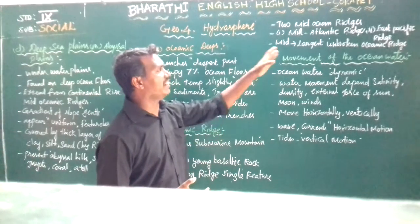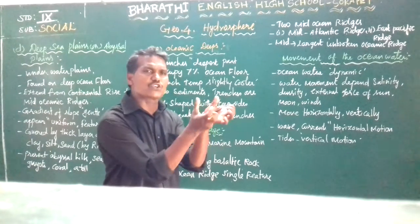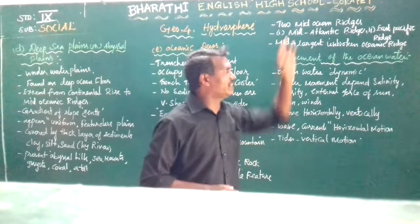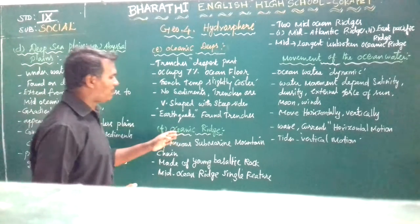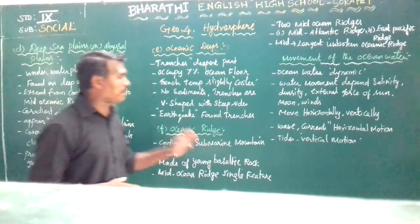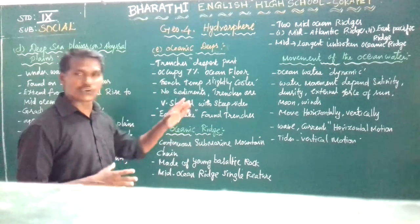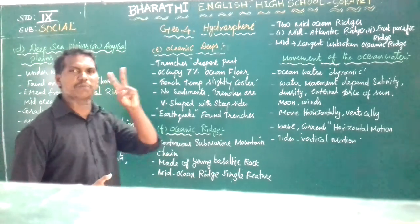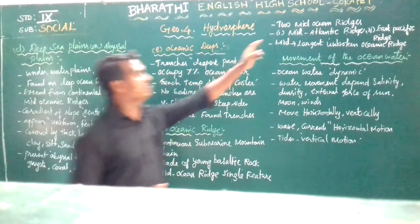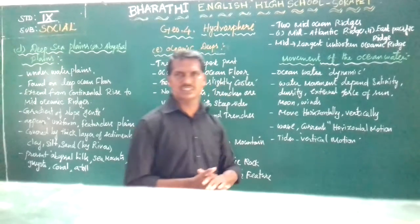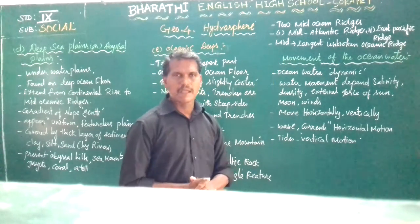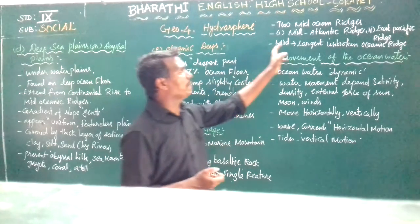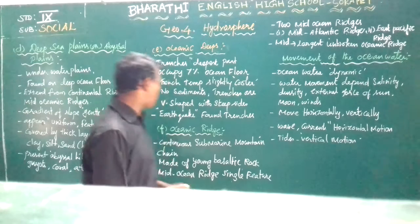To summarize: the oceanic ridge is a continuous submarine mountain chain made up of basaltic rock. The mid-oceanic ridge is a single feature. There are two types: the mid-Atlantic ridge and the east Pacific ridge. Among them, the mid-Atlantic ridge is the largest unbroken oceanic ridge. That is all about the oceanic ridge.